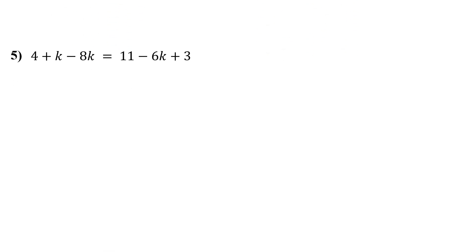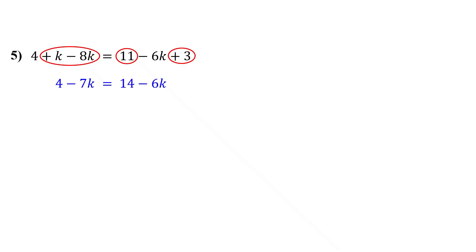This time, we have variables on both sides and some like terms too. Feel free to pause the video and give it a shot. The first step is to combine the like terms on each side of the equation. On the left, k minus 8k gives us negative 7k. On the right, 11 plus 3 equals 14. Now it is just like the previous example. So next, collect the variables on one side of the equation.